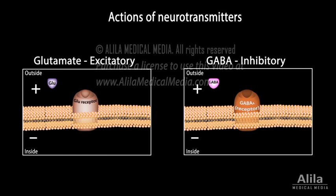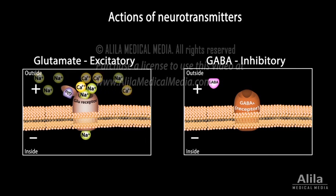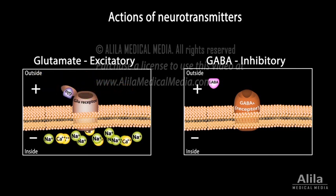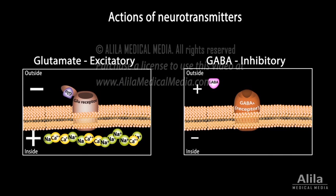An example of an excitatory neurotransmitter is glutamate. Upon binding, it triggers glutamate receptors, ligand-gated ion channels, to open and allow positively charged ions into the cell, making it more positive, less polarized, and thus more likely to generate action potentials.